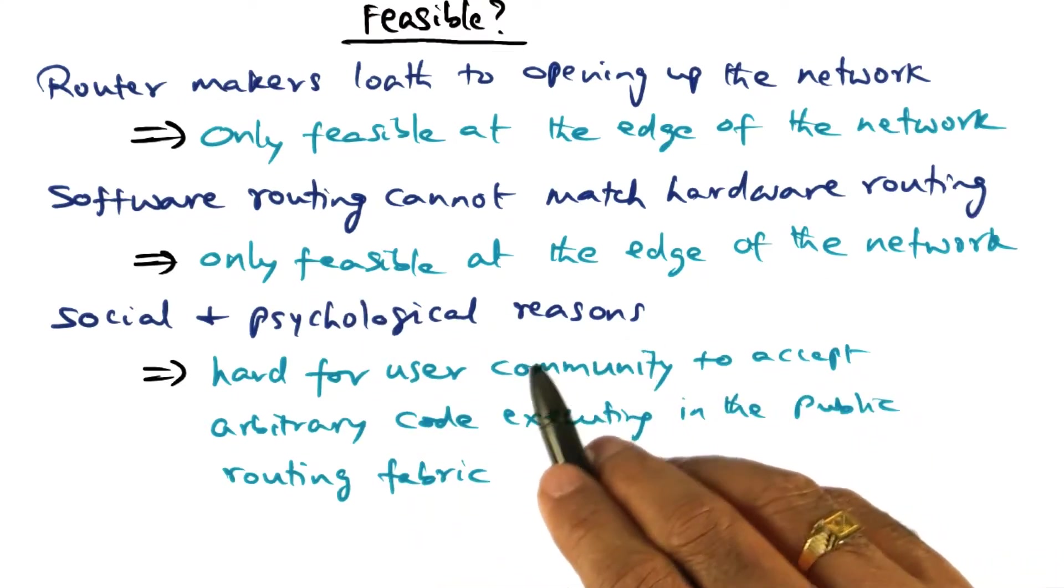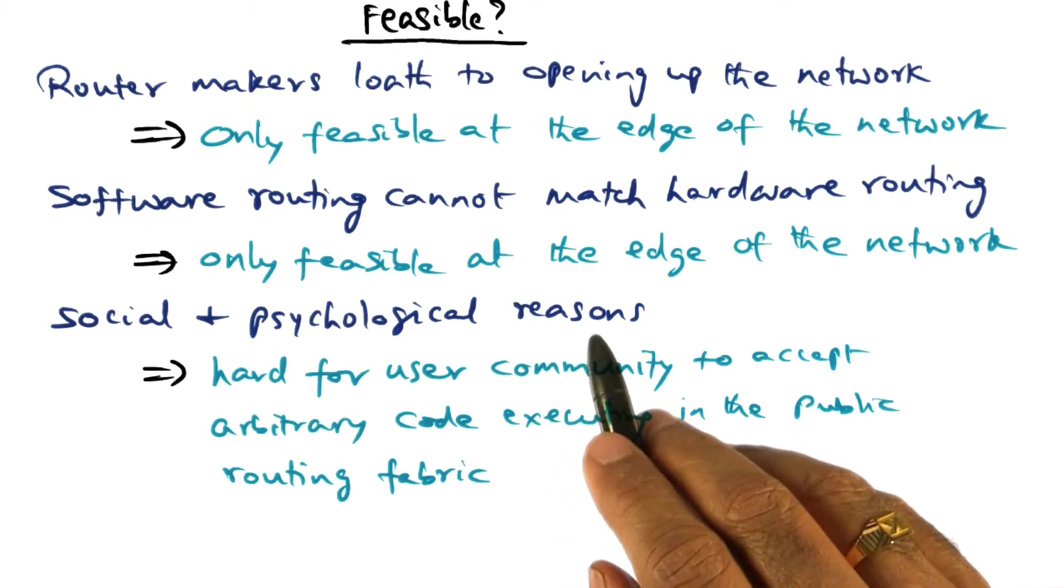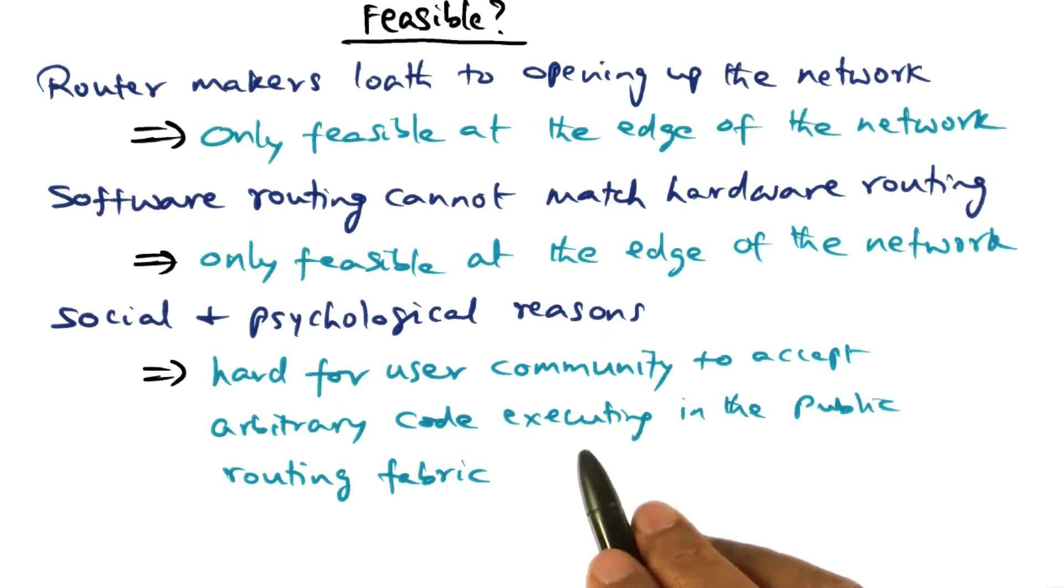And finally, there are social and psychological reasons why active networks is maybe a little bit hard to digest. It is hard for the user community to accept arbitrary code executing in a public routing fabric. If my traffic is flowing through the network, and if the router is going to actually execute some code to do the processing of my packet, that worries me.